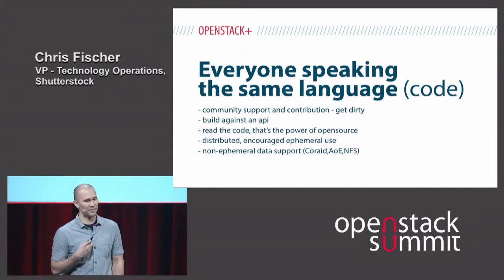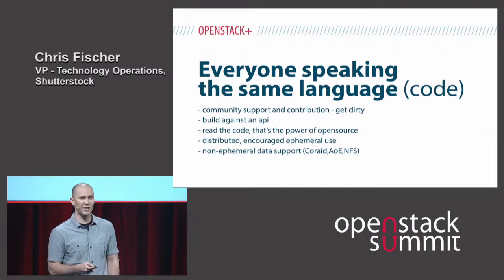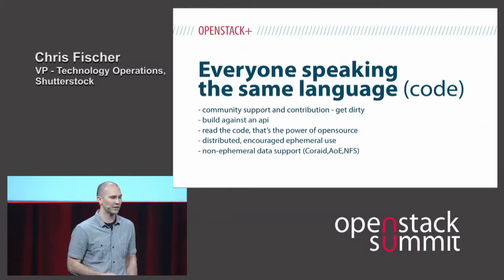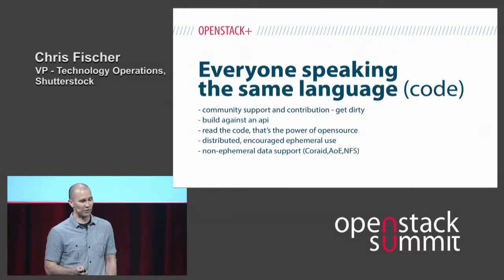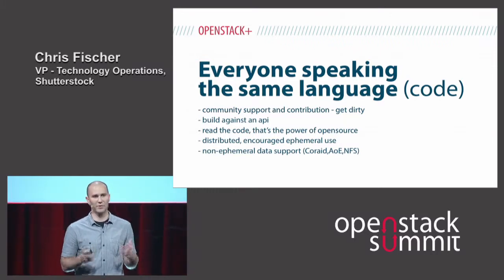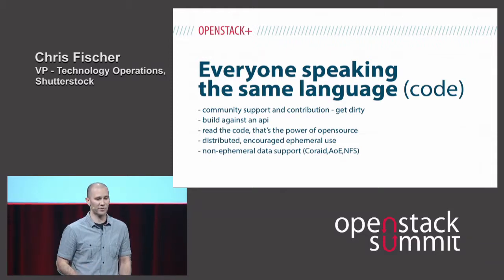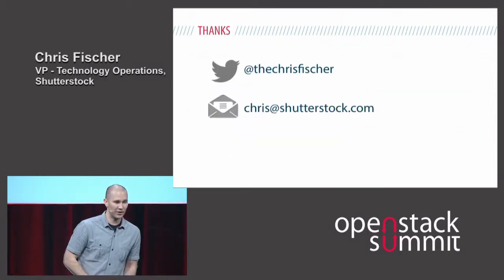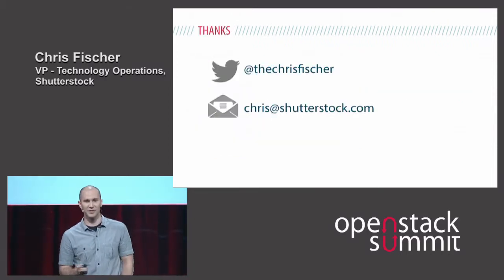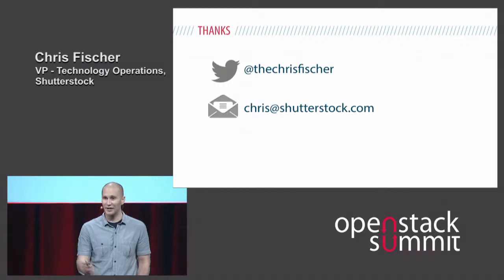OpenStack has great community support, and we have the ability to get in the code and get dirty. Everyone's building against an API, as opposed to using config management systems like Puppet and Chef. Building against an API is something that developers are going to embrace a lot more. Everyone can read the code, and effectively it encourages both ephemeral use with non-persistent data, as well as allowing you to integrate with systems that do have persistent data. Thanks — if you have any questions, you can tweet at me or send an email to chris@shutterstock.com.